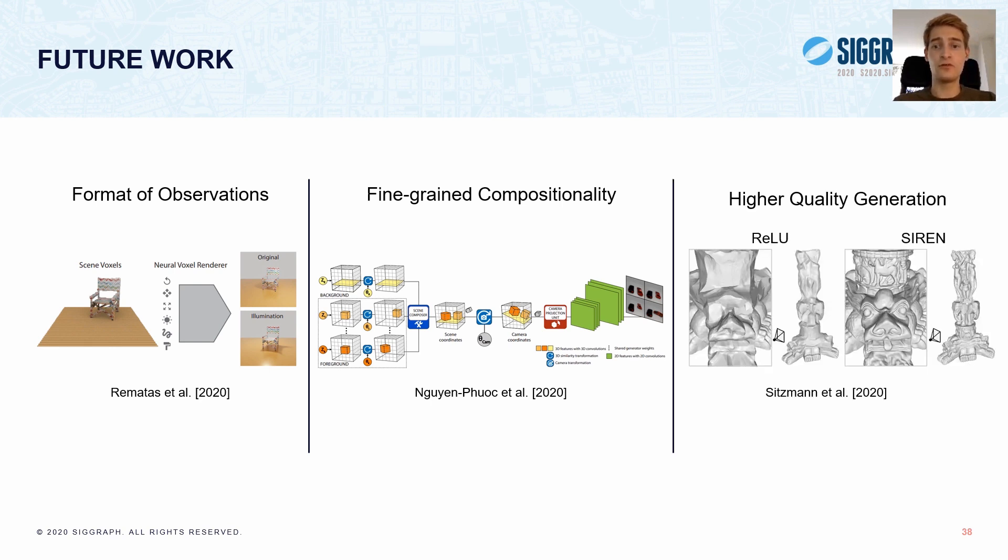Finally, we only studied simple scenes, but our networks already struggled with sharp details, such as shadows. Here one idea could be to adopt positional encoding schemes, or testing different activation functions like the ones suggested in the SIREN paper by Sitzmann and colleagues. And this could potentially lead to higher frequency detail being captured better, as you can see from this image here on the right.